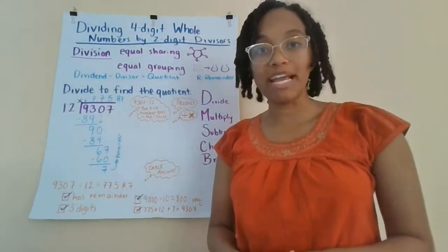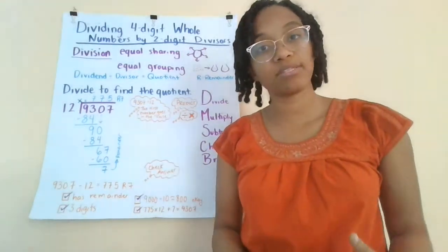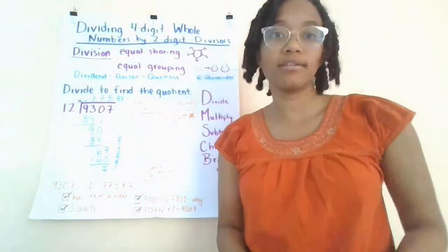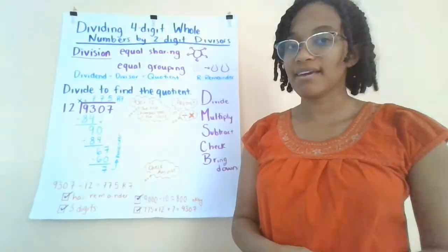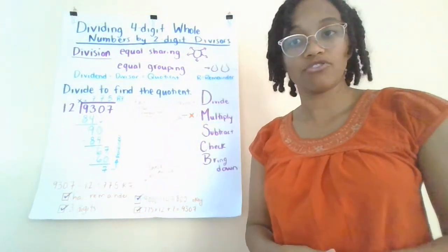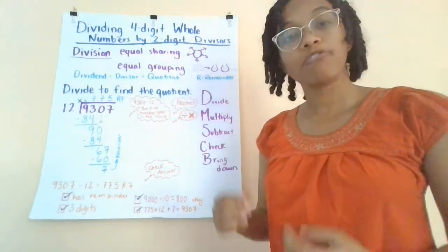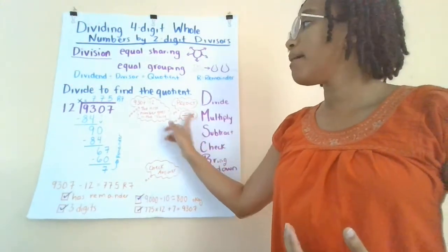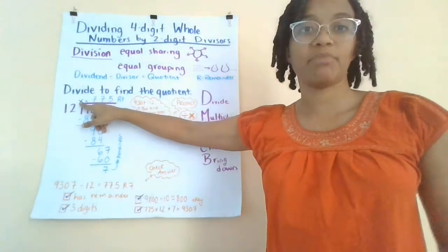Next, I'm going to predict, do I think I'll have a remainder? Well, I was looking at this problem and I noticed that 9,307 is an odd number and our divisor is an even number. That makes me think that 12 is not going to fit evenly into 9,307. So I predict we will have a remainder.